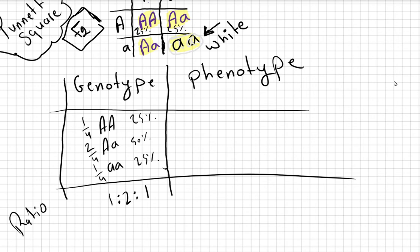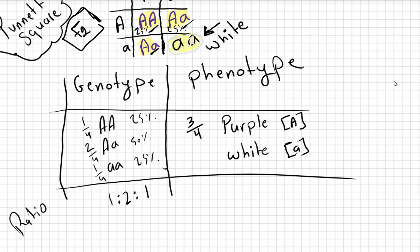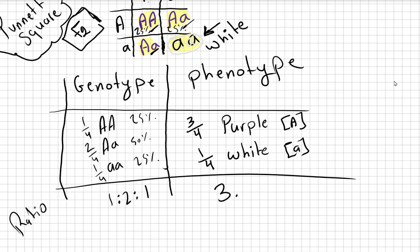For the phenotype: AA is purple, Aa is purple (because A is dominant), and aa is white. So 3 out of 4 are purple and 1 out of 4 is white. This is only a proportion — if we had 100 plants, around 25 would be white. The phenotype ratio is 3 to 1: for every three purple there is one white. This is the F2 generation result.